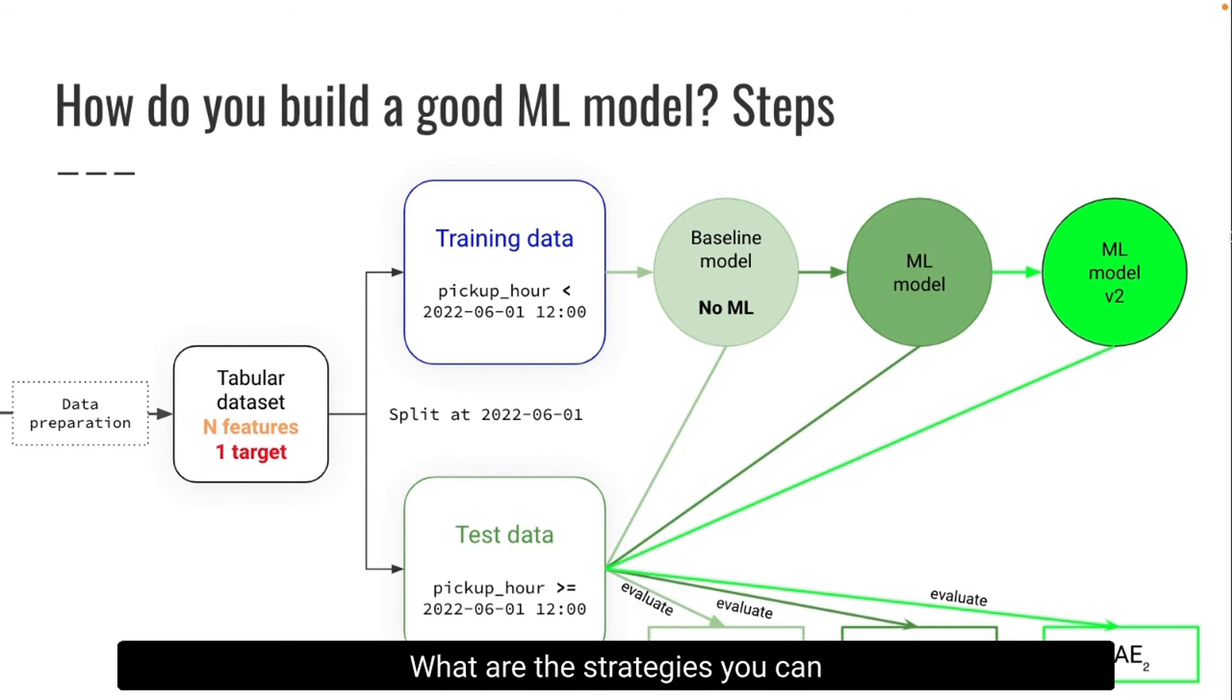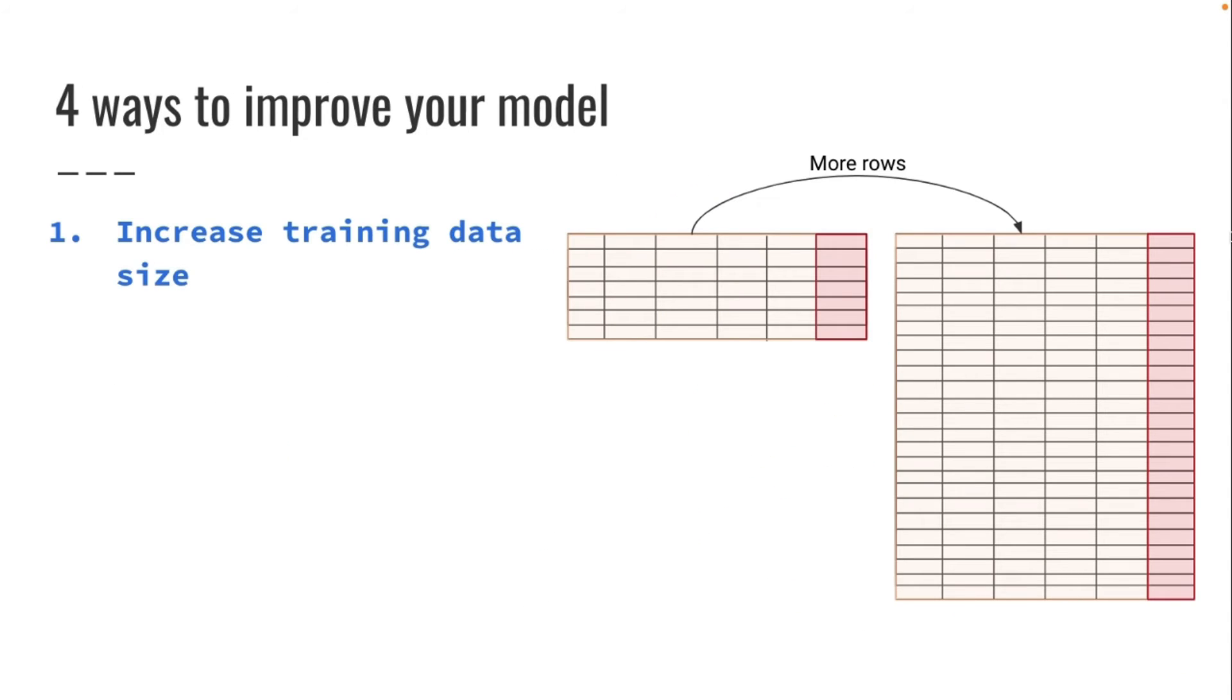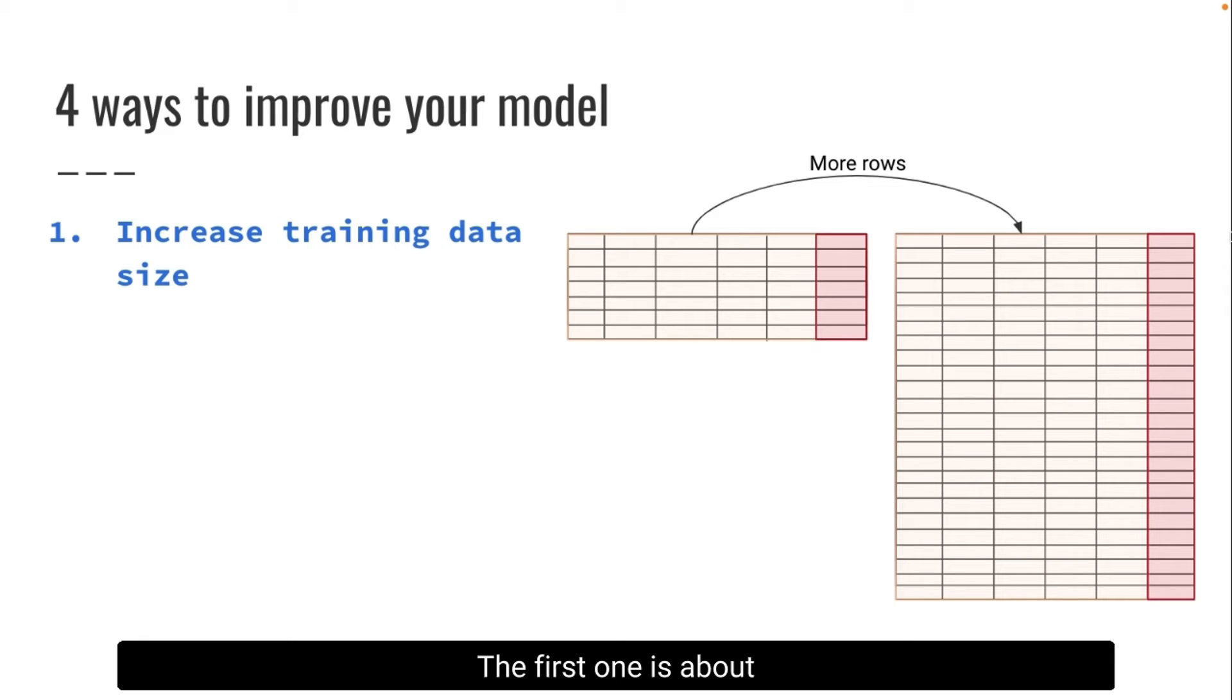Now the question is, how do you build this sequence of models? What are the strategies you can follow to find better models?